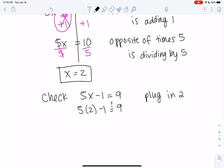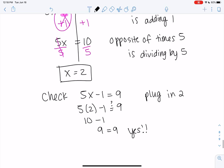So on the left side, I have 5 times 2 is 10, minus 1. 10 minus 1 is 9. So both sides are 9. Our solution is correct.